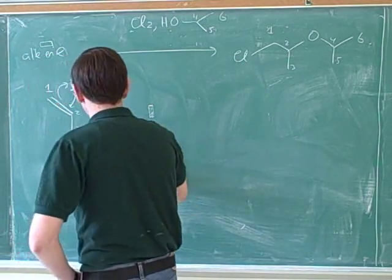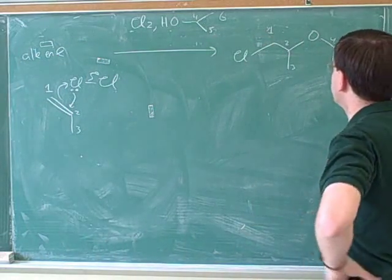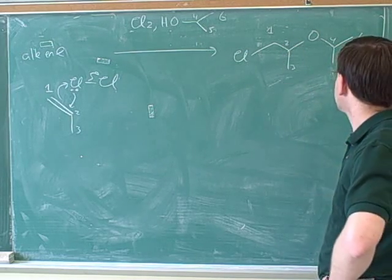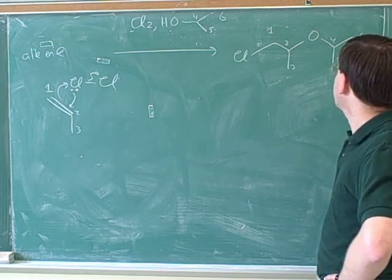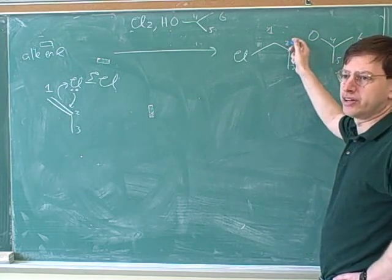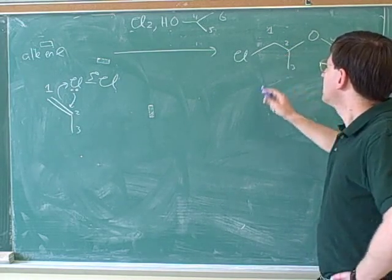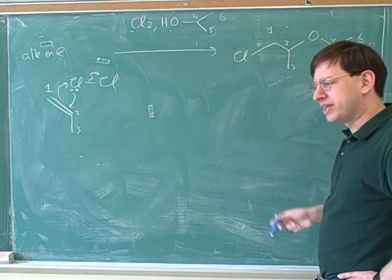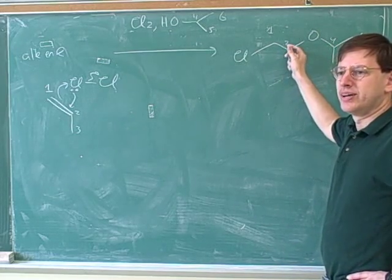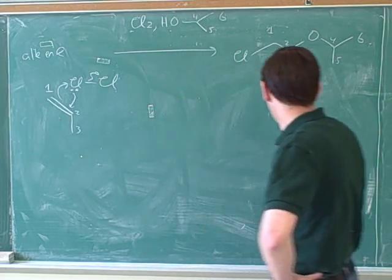Do we need to use dashes and wedges? That's a good point. The product here — they didn't seem to be focusing on the stereochemistry, so we didn't focus on it. We would actually get two enantiomers here because this is a stereocenter, but because they weren't focusing on stereochemistry in the synthesis, we didn't need to focus on it. If they draw something that's a stereocenter but don't use dashes and wedges, technically that means you have both enantiomers. We were going to get both enantiomers from this synthesis anyway.